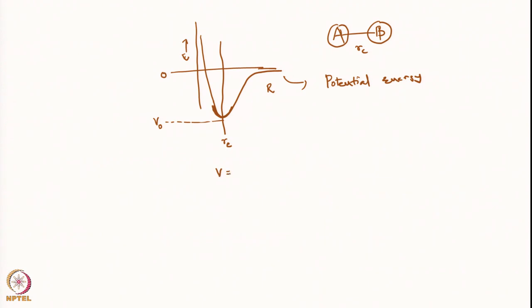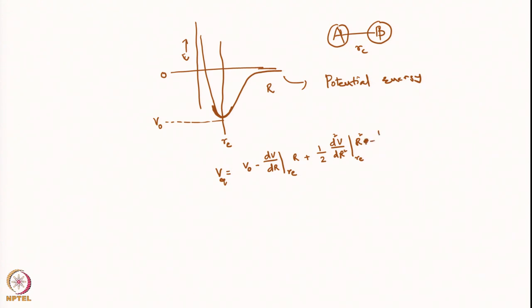The Taylor series gives V equal to V0, plus (dV/dr) at RE times r, plus (1/2!)(d²V/dr²) at RE times r², plus (1/3!)(d³V/dr³) at RE times r³, plus (1/4!)(...) times r⁴, and so on.